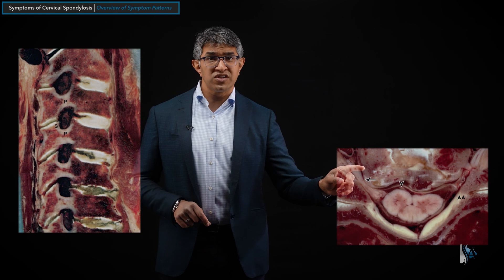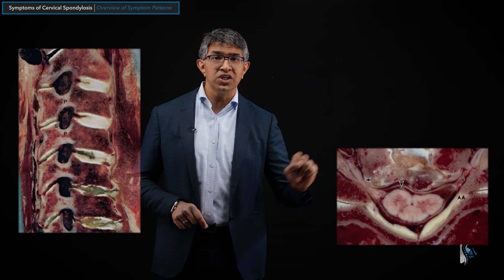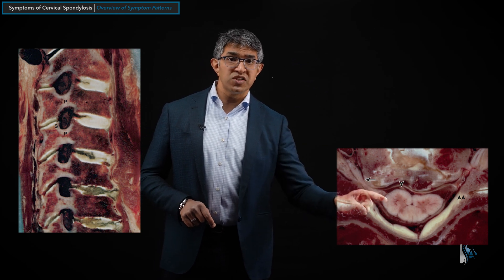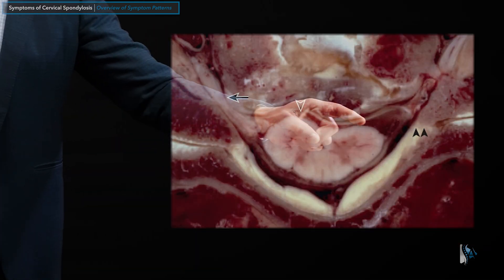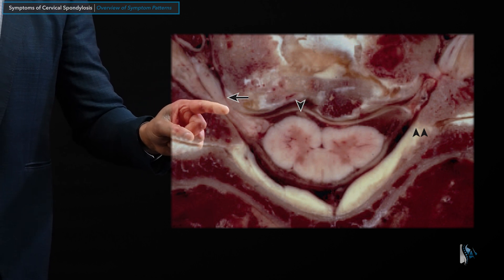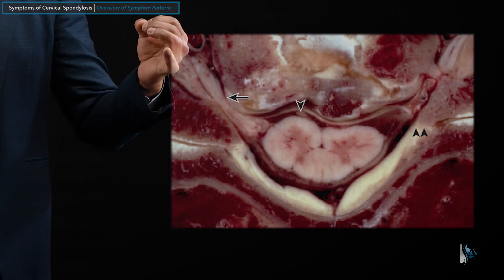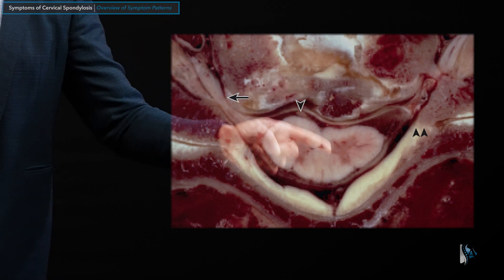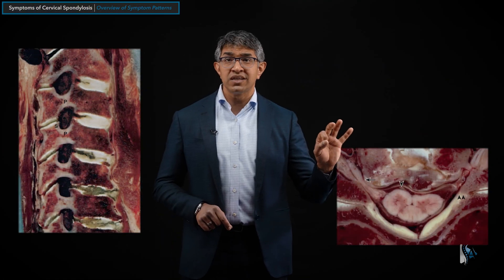When you think about arthritic changes — and we've covered this in prior chapters — these frozen sections from Professor Wolfgang Rauschning really highlight the relationship between some of these arthritic changes and the structures around them. Here you can see the spinal cord in cross section; there's a nerve leaving on the right side and a nerve leaving on the left side. The pressure on the nerve, related to a bone spur and disc material pressing on it, can give rise to symptoms. Similarly, disc material, bone spurs, and ligament thickening squeezing on the spinal cord can cause symptoms related to that.